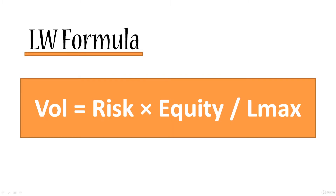This is the Larry Williams formula: Volume equals Risk times Equity divided by the maximum loss per contract. Before you think that it's scary or intimidating, let's right away discuss these four elements and you'll see that it's actually a very simple formula.